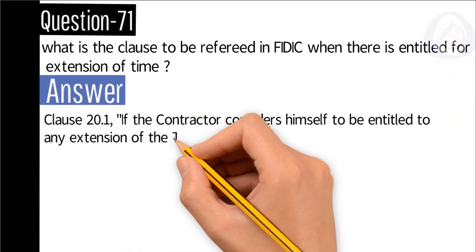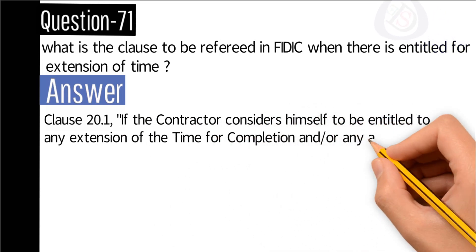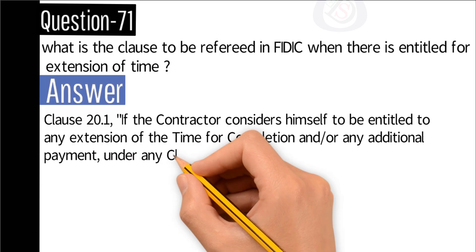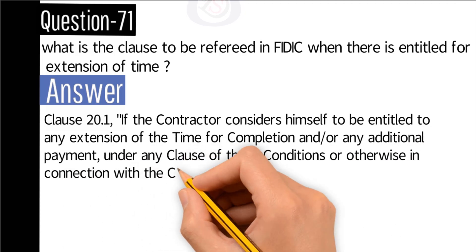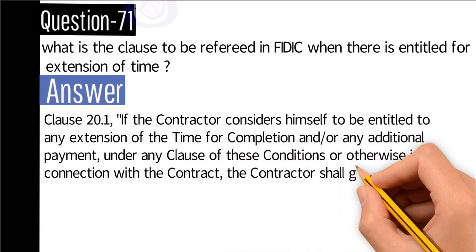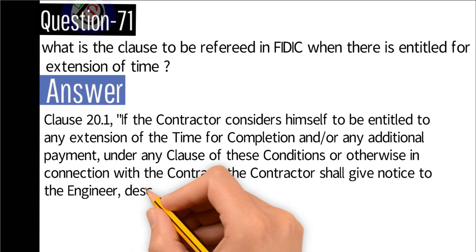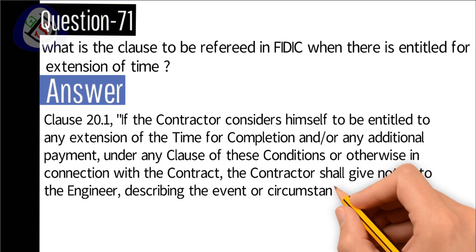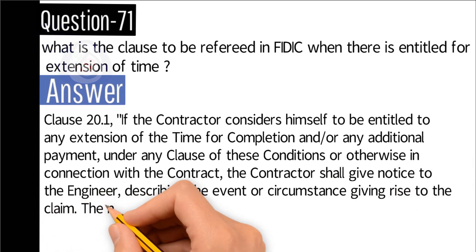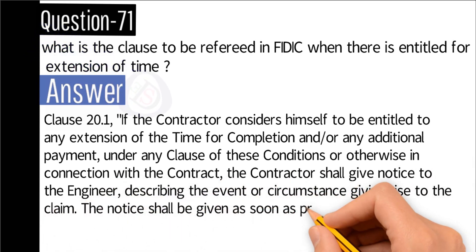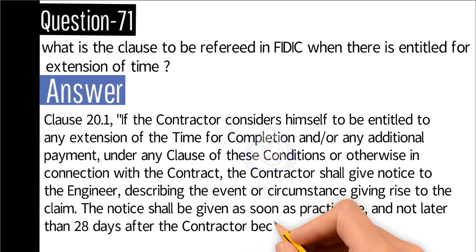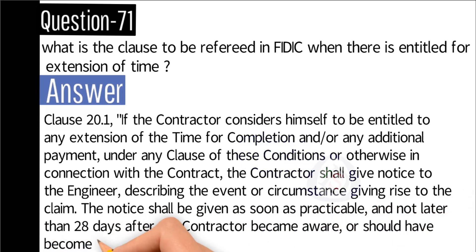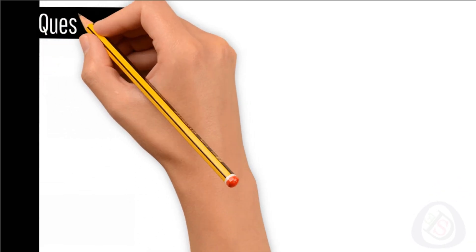Question number 71: What is the clause to be referred in FIDIC when there is entitlement for extension of time? Answer: Clause 20.1. If the contractor considers himself to be entitled to any extension of the time for completion and/or any additional payment under any clause of these conditions or otherwise in connection with the contract, the contractor shall give notice to the engineer describing the event or circumstance giving rise to the claim. The notice shall be given as soon as practicable and not later than 28 days after the contractor became aware or should have become aware of the event or circumstance.